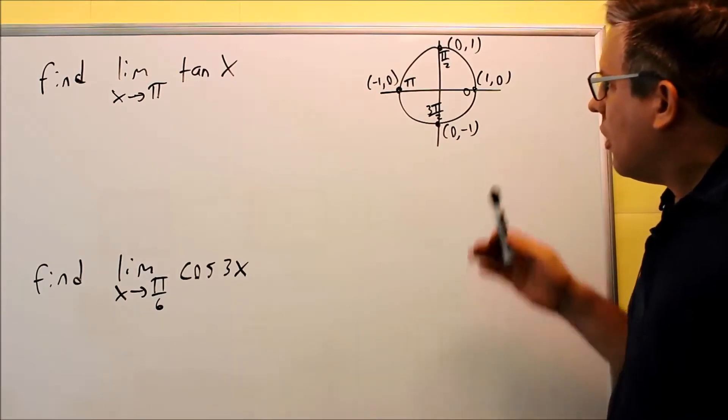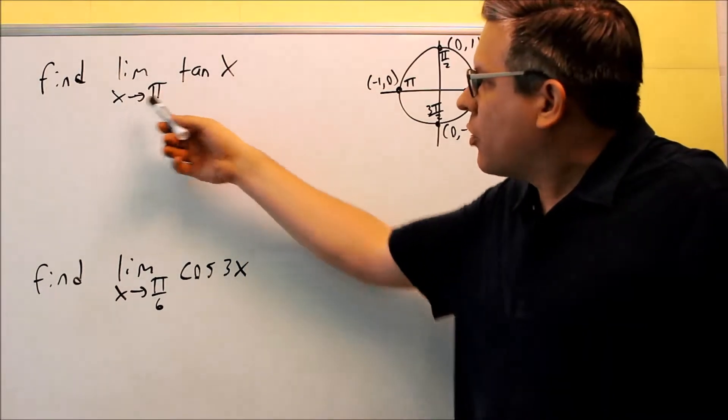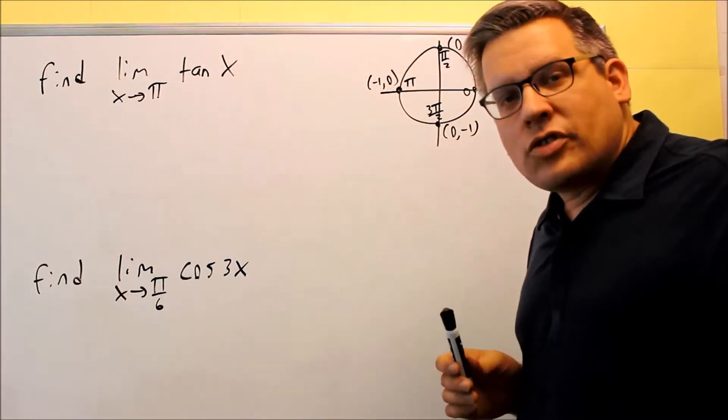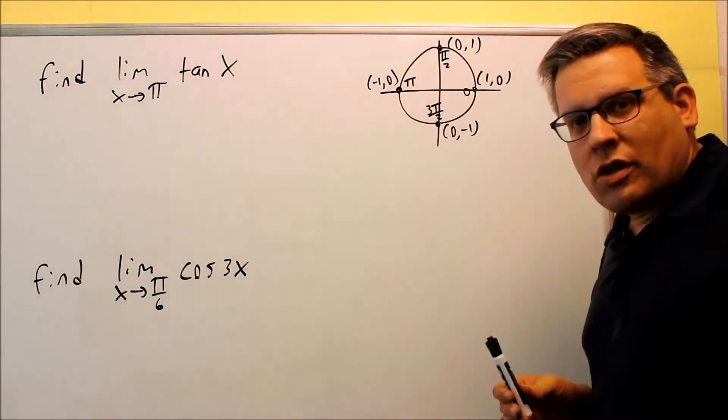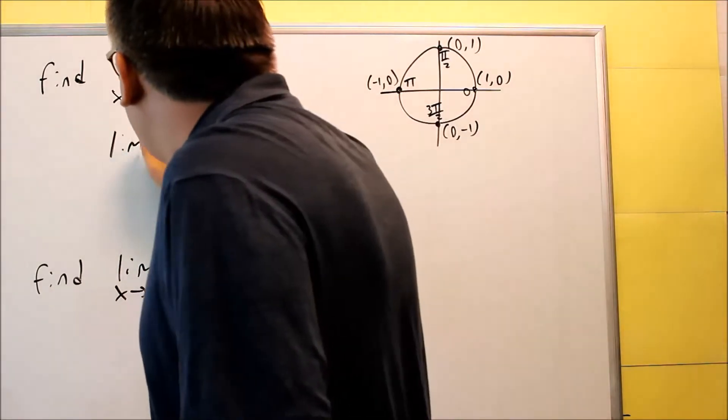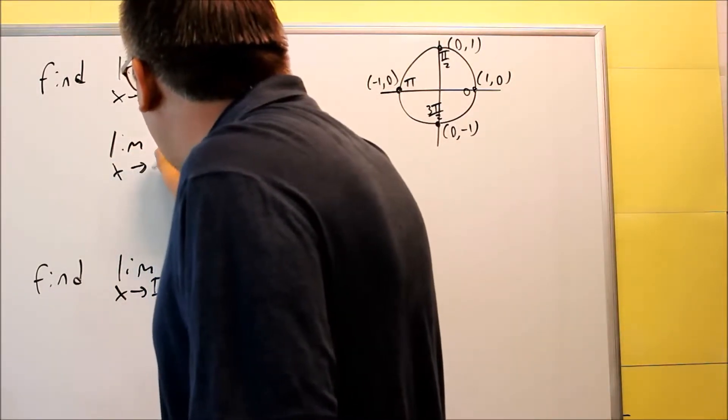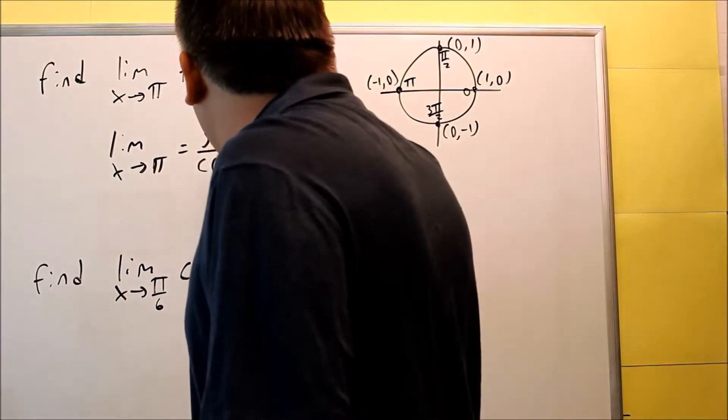Okay, so this applies for this particular problem here. So this says you want to find the limit as x approaches π of tangent. Now tangent, when you're looking at it in a circle, we can write that as an identity. Okay, so this is the same thing as sin x over cos x.